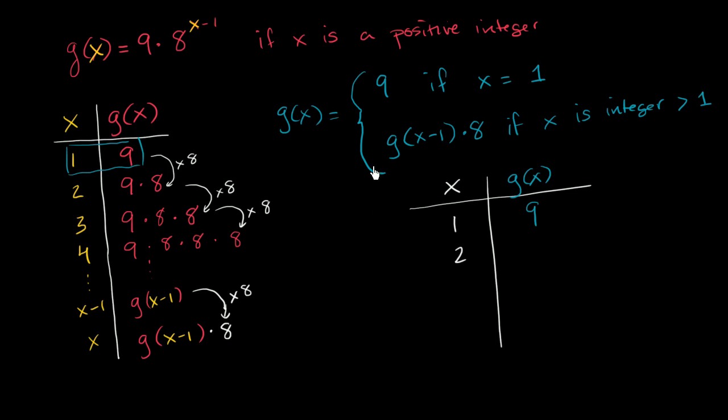What happens when x equals 2? Well, when x equals 2, this case doesn't apply anymore. We go down to this case. So when x is equal to 2, it's going to be equivalent to g of 2 minus 1 times 8, which is the same thing as g of 1 times 8. And what's g of 1? Well, g of 1 is right over here. g of 1 is 9.